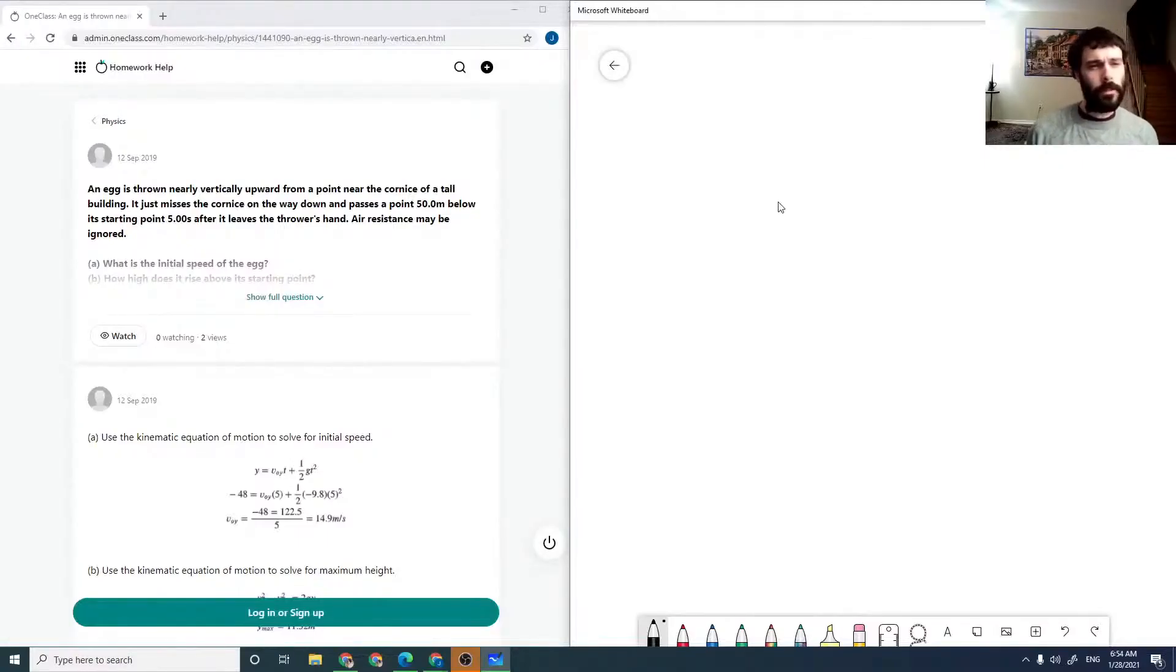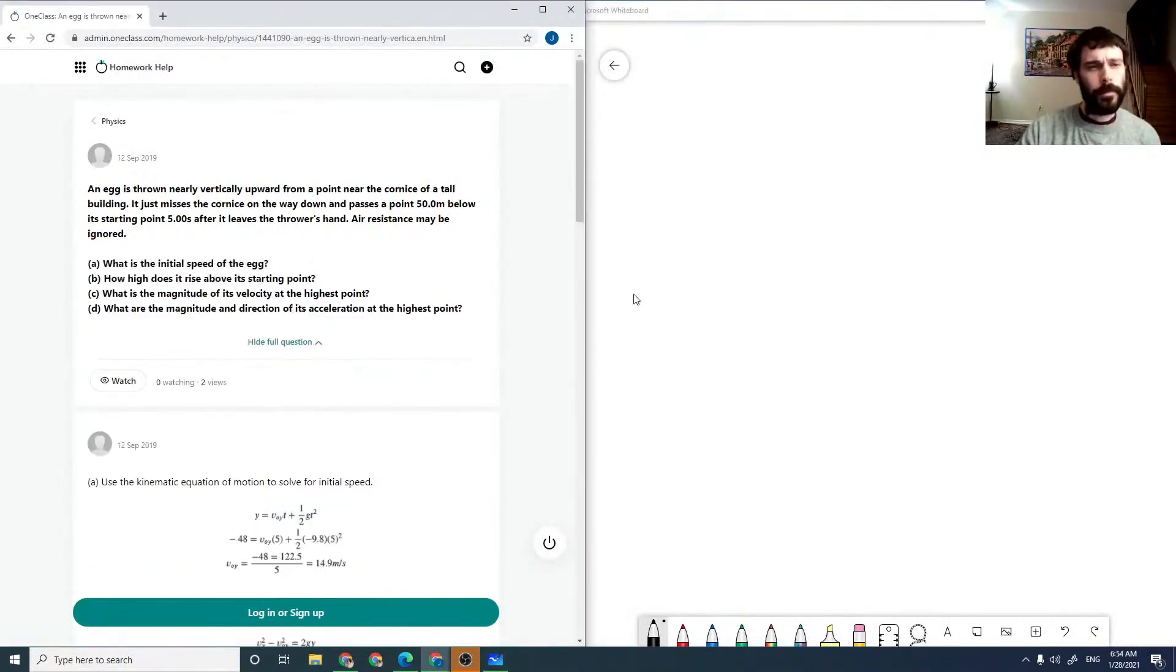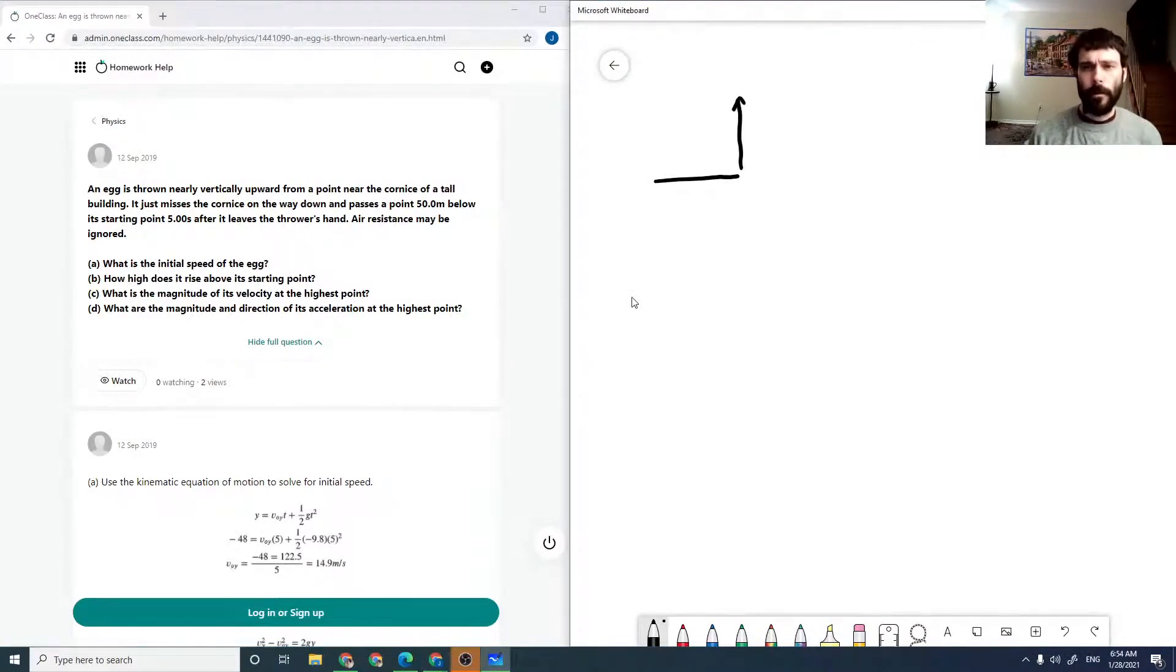Okay, so we've got an egg is thrown vertically upward near the corner of a tall building, so it flies vertically upward and it goes back down.